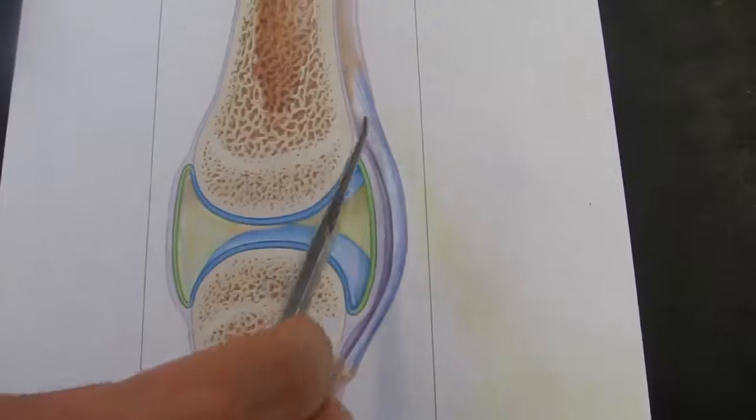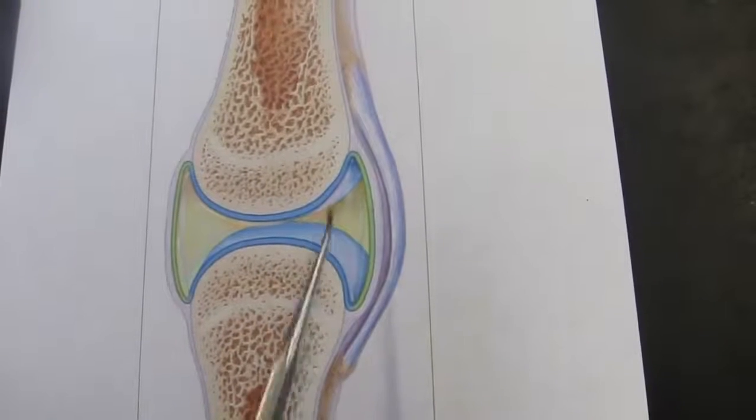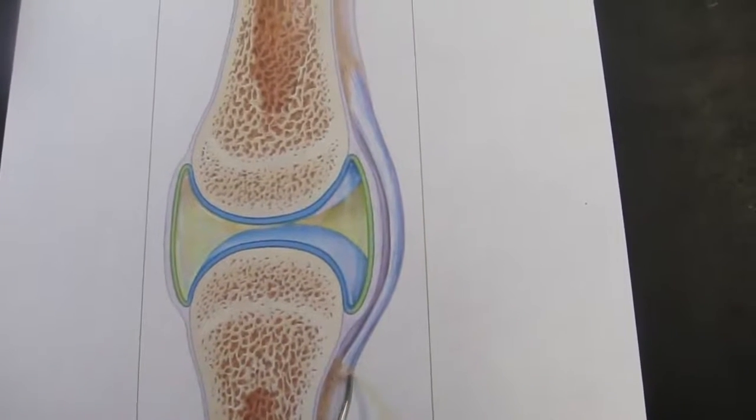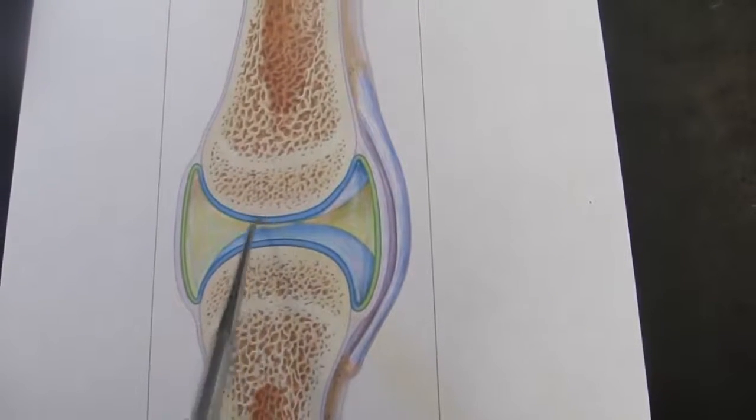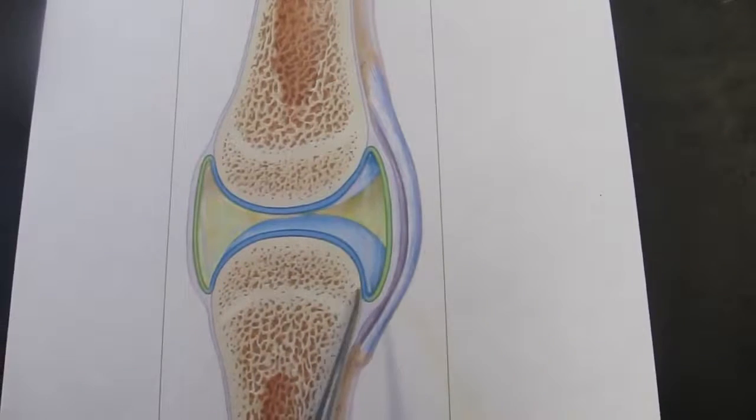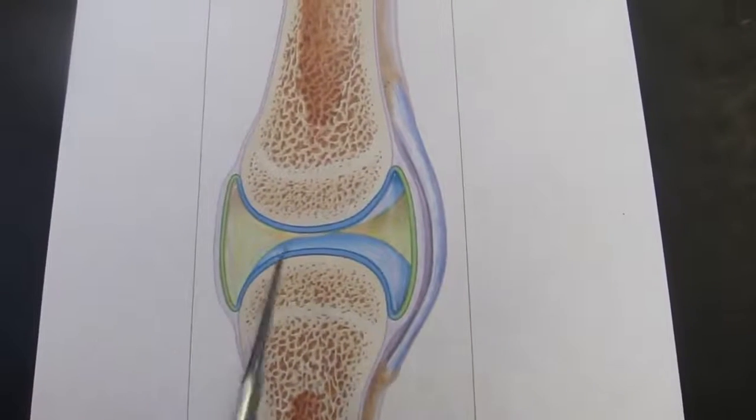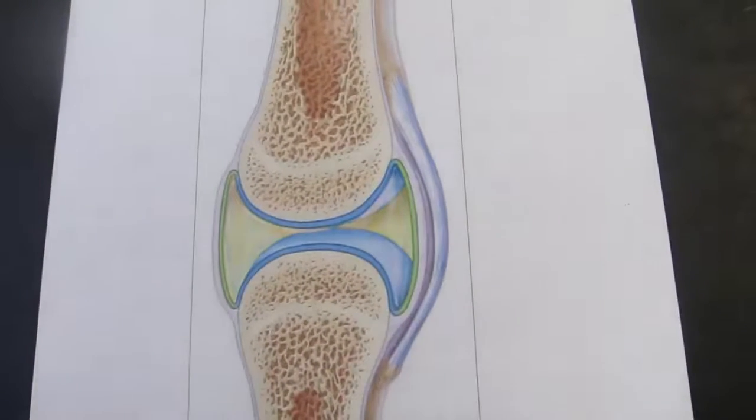This happens to be an extracapsular ligament, which means it's outside of the joint cavity. Sometimes you'll have intracapsular ligaments that are inside the joint cavity or inside the joint capsule. So that is the basic structure of a synovial joint.